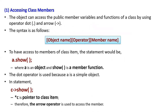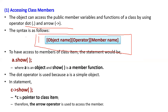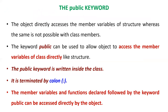An object can access public member variables and functions of a class using the dot operator or the arrow operator. The syntax is: object name, operator, member name — for example, 'a.show' or 'c->show'. Simple objects use the dot operator and pointer objects use the arrow operator, just as with structures. Using the public keyword allows objects to directly access the member variables of a class, just like structures.